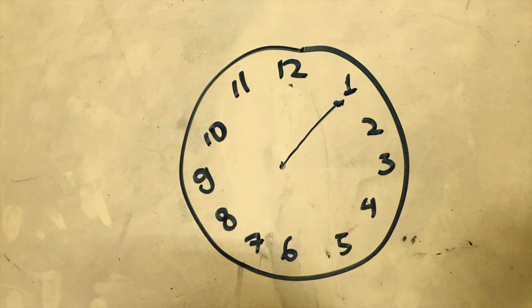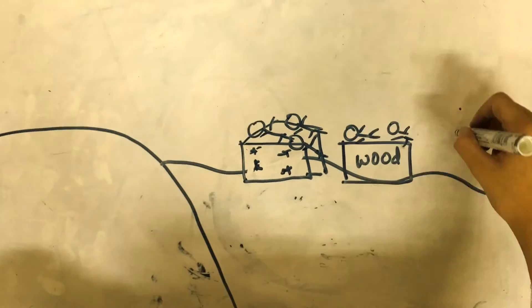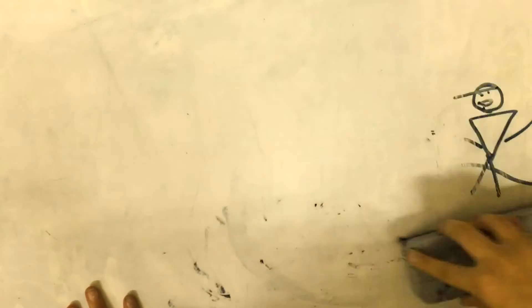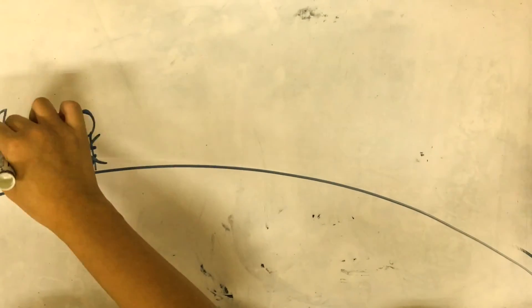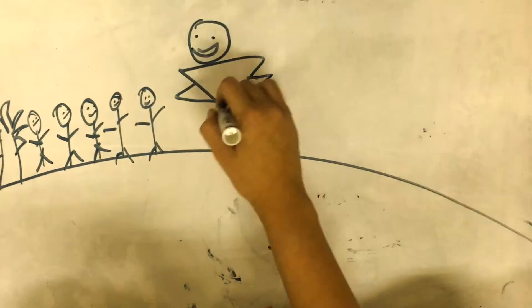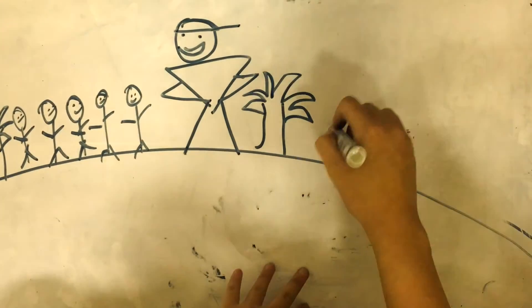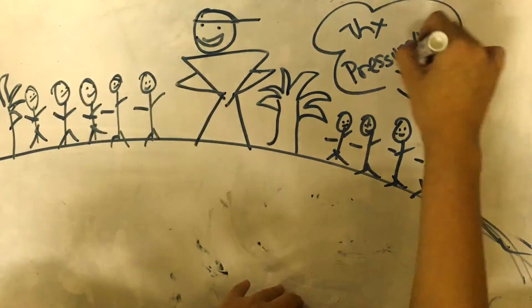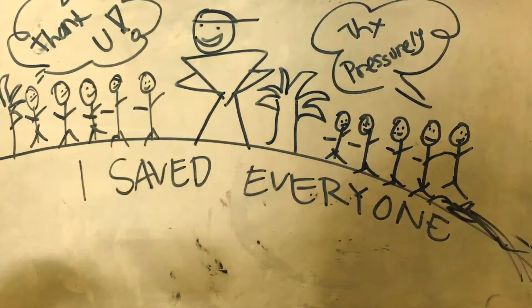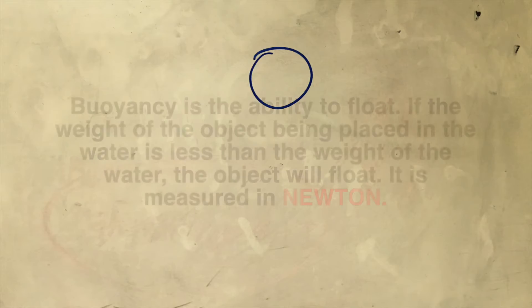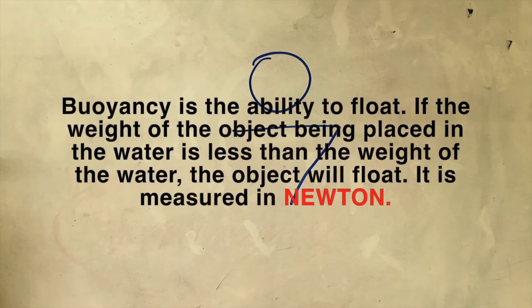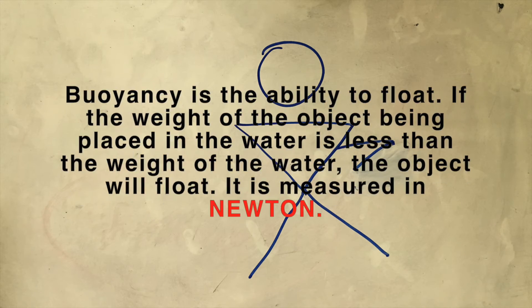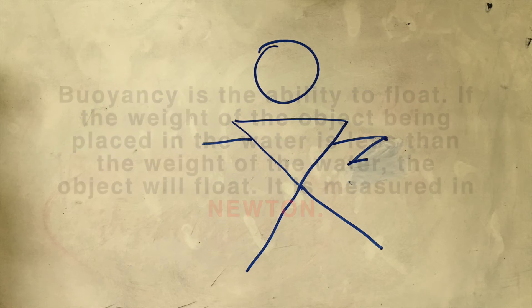Five hours later... Buoyancy is the ability to float. If the weight of the object being placed in the water is less than the weight of the water, the object will float. It is measured in Newtons.